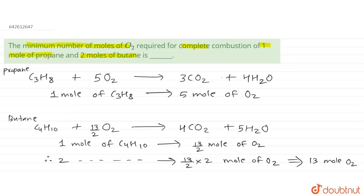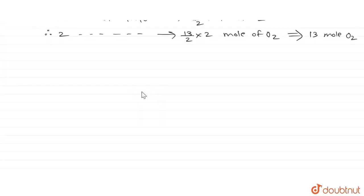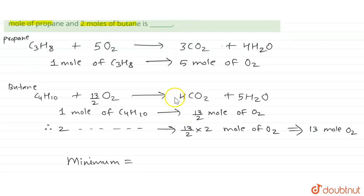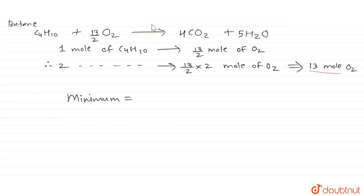Now they ask you the minimum number of moles of O2. So what is going to be that minimum number of moles of O2? Minimum will be five moles for propane and 13 moles for butane, so 5 plus 13 will give you 18 moles of minimum O2.